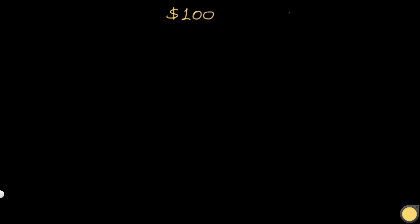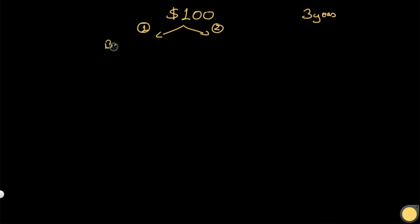Let's say you have a hundred dollars and you don't need this money for the next three years, so you're going to invest it somewhere. You have two options: option one and option two. Let's start with option one — you can put this money in the bank for the next three years and just forget about it.